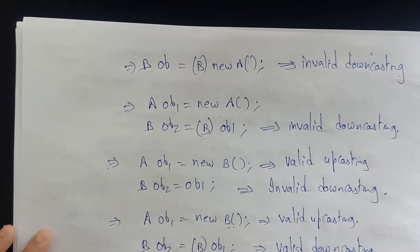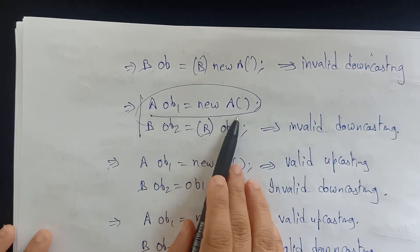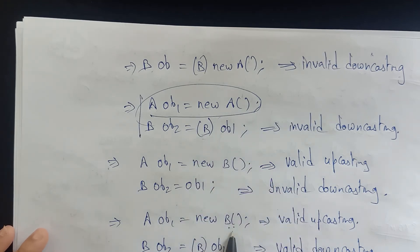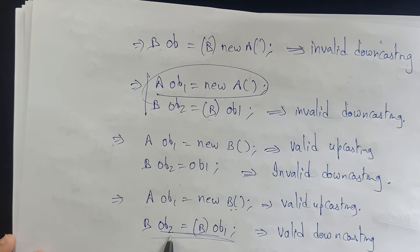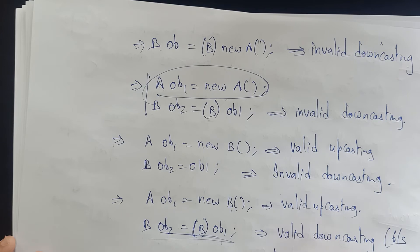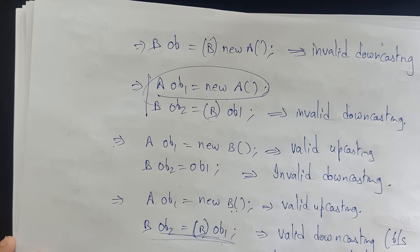See here — the earlier example is invalid downcasting because the object was created only for the superclass. But here I created an object for the subclass. Whenever I created an object for the subclass, I can allocate to the superclass also. So with the help of this explicit constructor cast, this is valid downcasting — because the programmer explicitly performed it.